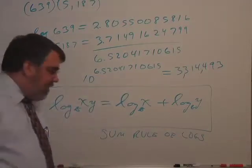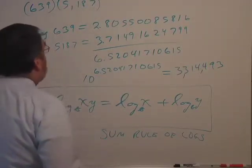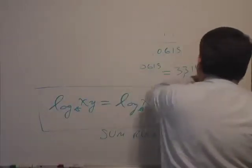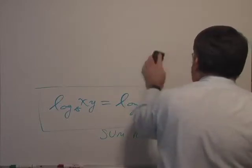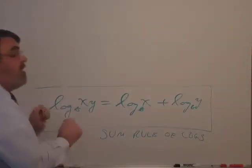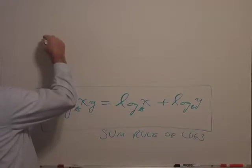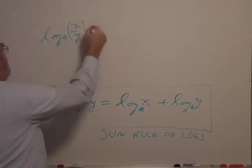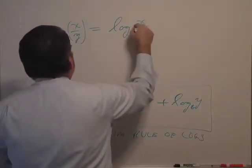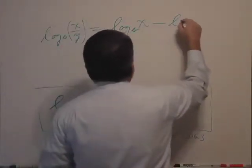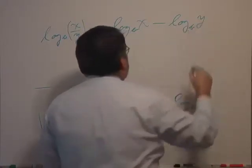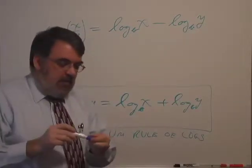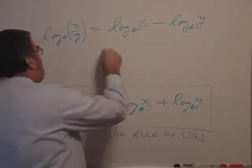All right. Well, let me draw out the other rule here that goes along with this sum rule. And it's the difference rule. So if you took the log of x over y in any base, then that would be the difference. The log of x minus the log of y. So here's a way of dividing numbers by subtraction. So anyway, this is the difference rule.